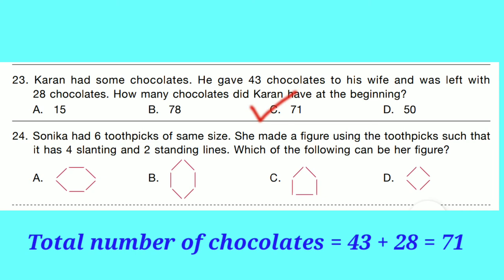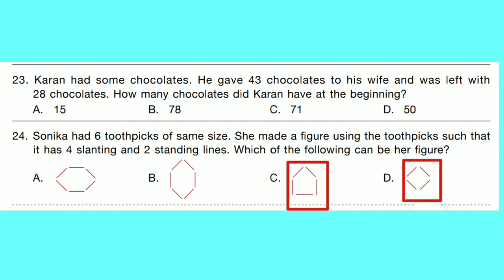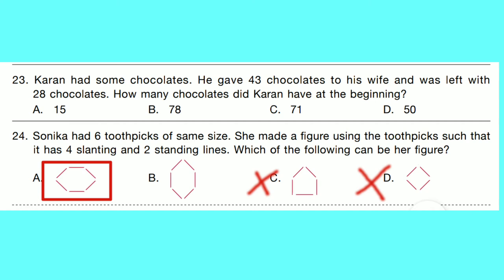Question number 24: Sonika had 6 toothpicks of the same size and made a figure with 4 slanting and 2 standing lines. Which figure is correct? Option D has 4 lines, option C has 5 lines, so both are cancelled. Option A has 4 slanting lines and 2 slipping lines, but option B has 4 slanting lines and 2 standing lines. So option B is correct.